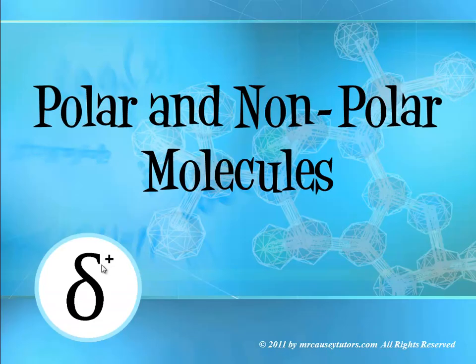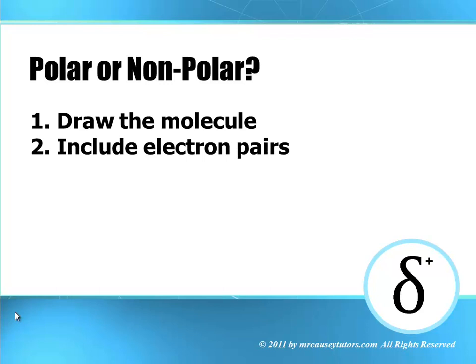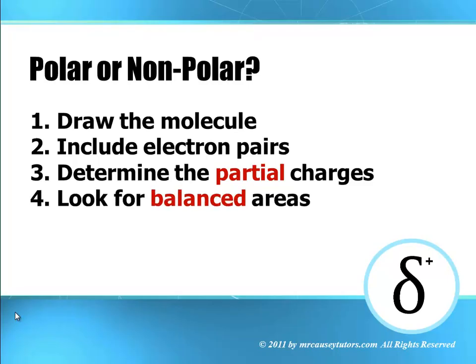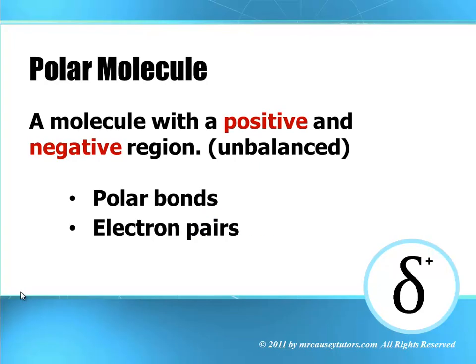Now let's talk about polar and nonpolar molecules. The polar bonds help us understand polar molecules. Remember, molecule refers to covalent bonds or covalent compounds. To determine polar or nonpolar: first draw the molecule, then include electron pairs, determine the partial charges according to electronegativity, and look for balanced or unbalanced areas. If it's balanced or symmetrical, it's going to be nonpolar. But if it is unbalanced — one side negative, another part positive — now we're looking at polar. A polar molecule is a molecule with a positive and negative region; it's unbalanced, and it will be polar bonds and electron pairs that determine this.